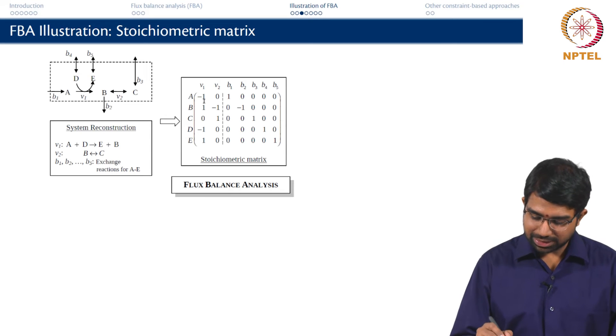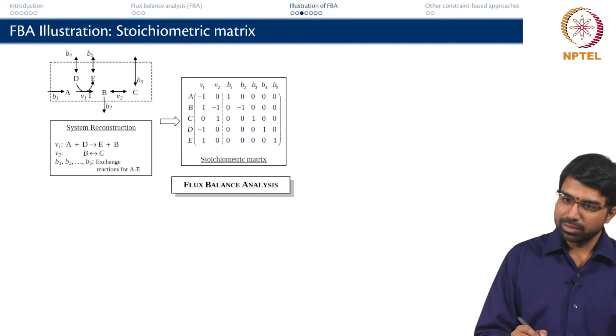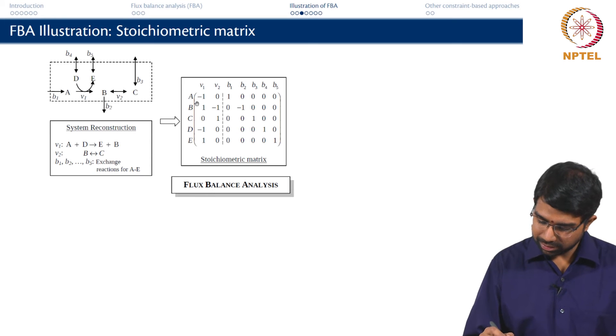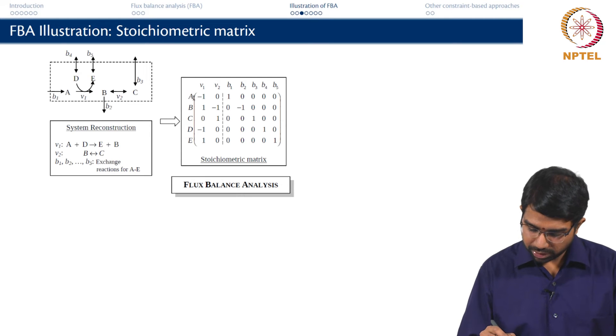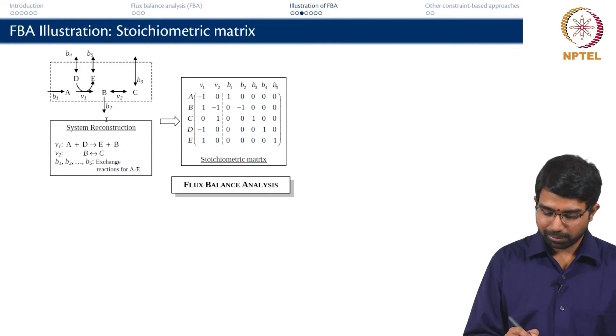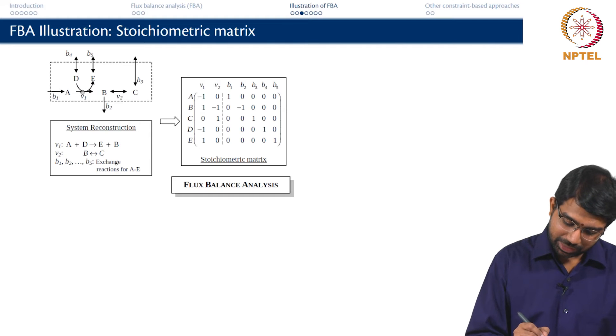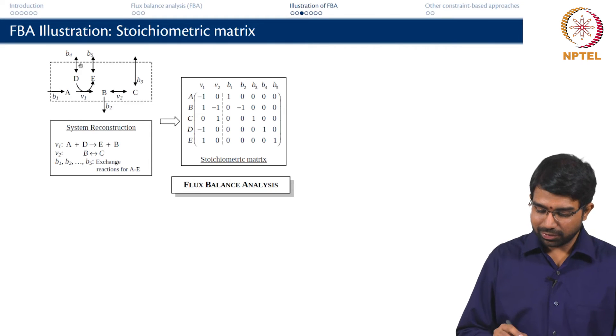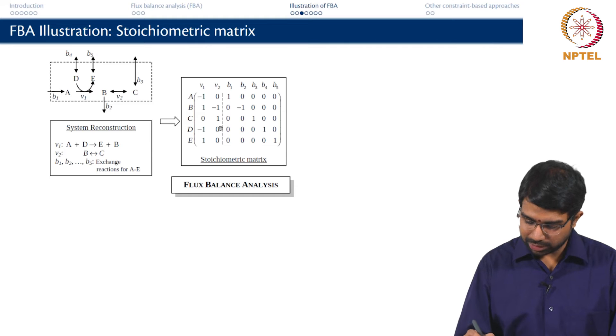So the stoichiometric matrix will therefore be 5 cross 7 and it will look like this. So now you can see the balance nicely. V1 is B1 which really makes sense. You will find that minus V1 plus B1 equal to 0, balance for A. And B is involved in 3 reactions. So V1 minus V2 minus B2 equal to 0. Whatever flow comes in, split across these two. This V2 is in turn dependent on B3, this V1 is in turn dependent on something else and so on. But overall because V1 also is linked to B4, V1 is also linked to B5.